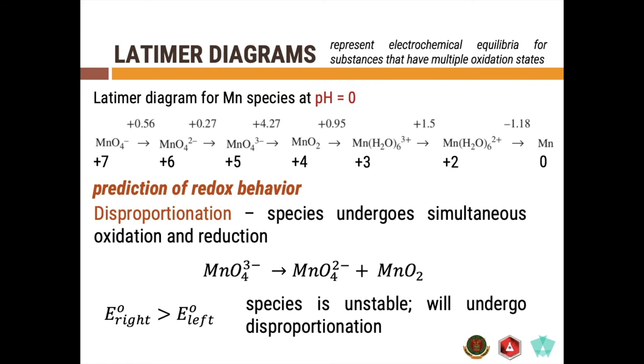...then that means that particular substance is unstable and will undergo disproportionation spontaneously. So, if we have MnO4 3 minus, the standard reduction potential to its right is plus 4.27 and the standard reduction potential to its left is plus 0.27. So, this means MnO4 3 minus will undergo disproportionation reaction.